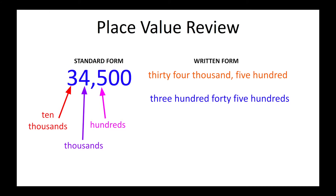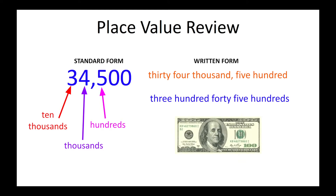Let's take a look at why 34,500 is the same thing as 345 hundredths. Let's think about Benjamin Franklin on the $100 bill. If we were talking money and I wanted to produce $34,500, how many hundreds would I need? If I owed you $34,500 and I only gave you $500 in bills, you'd feel cheated — you'd say we're $34,000 short, where's the rest of the money?